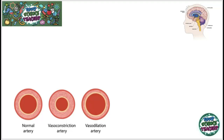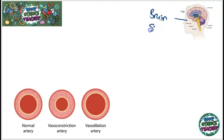This topic starts off by looking at how we control the temperature inside our body. The control of temperature starts in the brain, where receptors in the hypothalamus can detect a change in temperature in the blood. Receptors in the skin can also give further information about temperature. Once a change is detected, the body needs to issue a response.